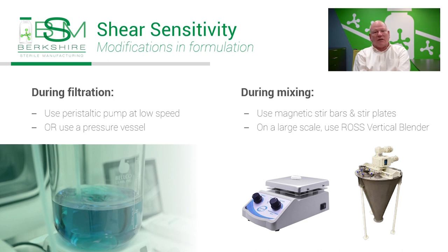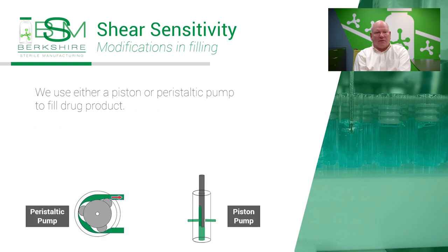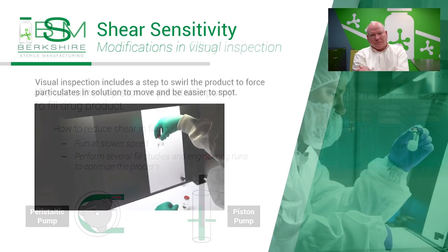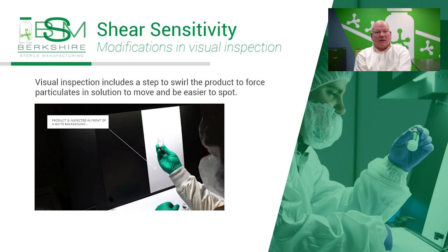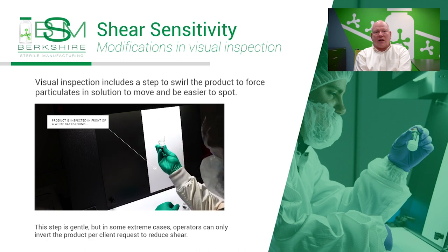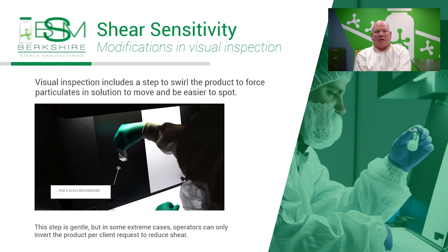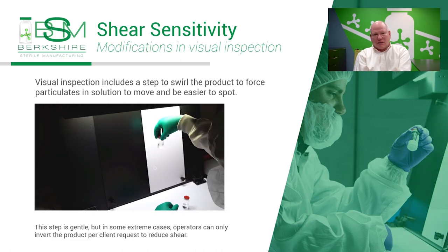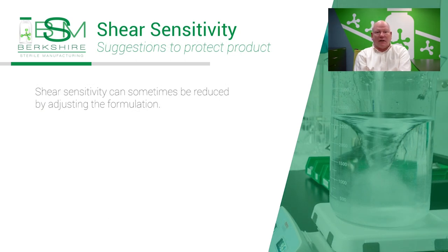The Ross vertical blender consists of a low-speed auger that orbits the periphery of the conical vessel while gently lifting the material upward. In sterile filling, we use either a piston or peristaltic pump to fill the product. We can fill at a slow speed to reduce shear, but the best way to overcome challenges with shear-sensitive products is to perform several fill studies and an engineering run to optimize the process. During visual inspection, it's standard practice to swirl product to suspend and move any particulates so they may be easily spotted. Some products have required that our operators only invert the product per client request, though this does diminish the detectability of particulates and should only be performed in extreme cases.